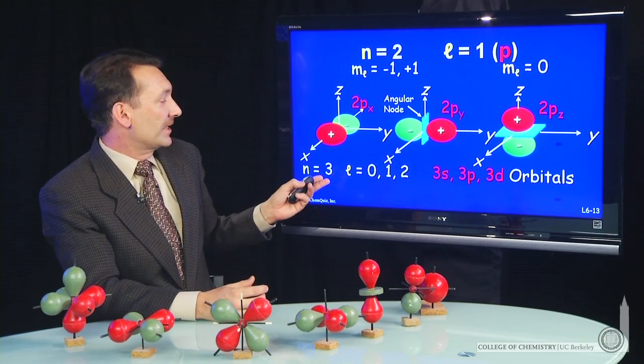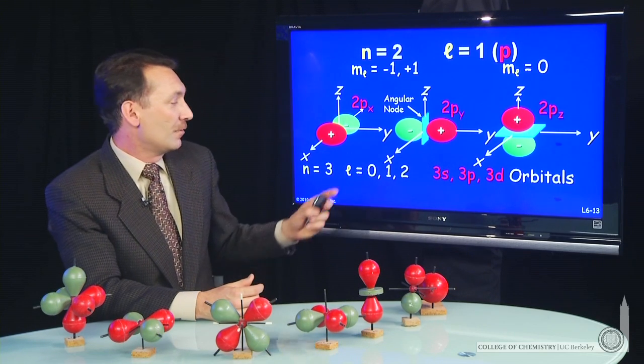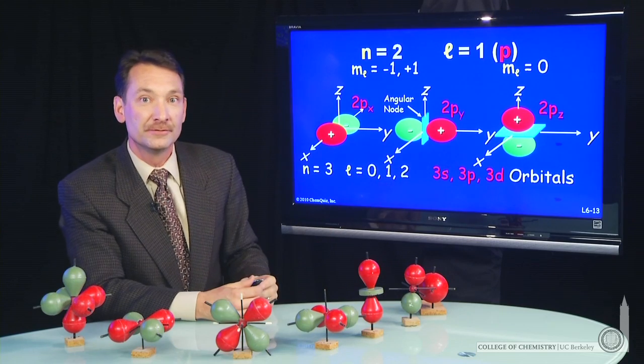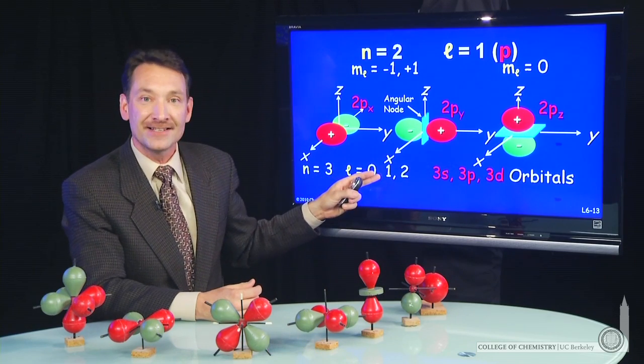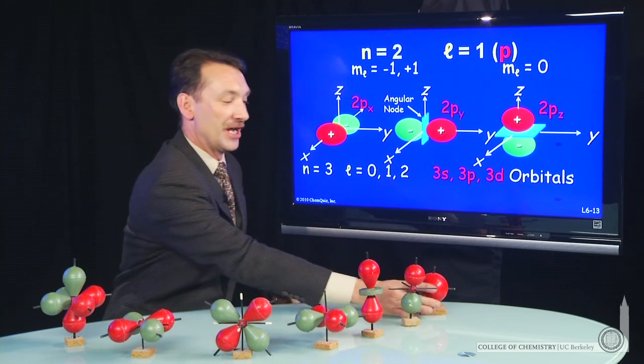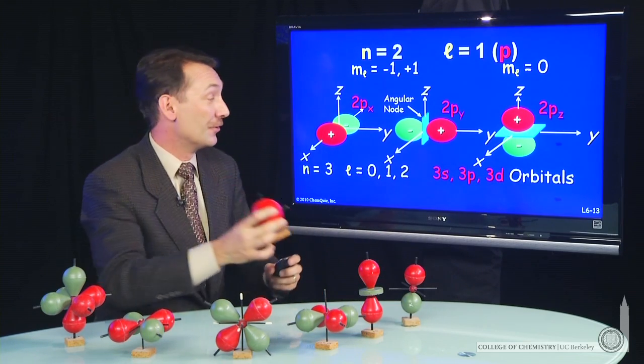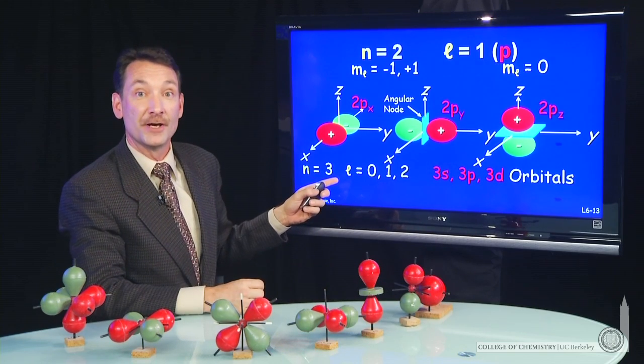Now we can continue. If we go to n equal 3, we're allowed to have l values 0, 1, and 2. So we'll have a 3s. That'll be spherically shaped. It'll have two nodes now, two radial nodes, because the total number of nodes is n minus 1.